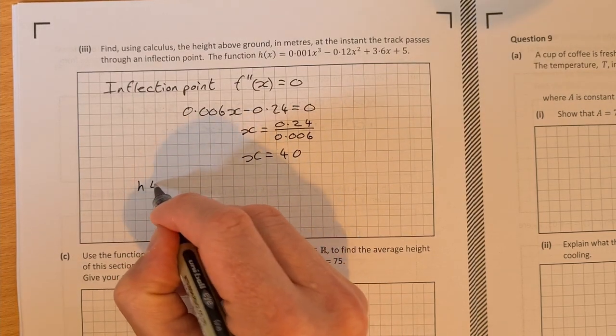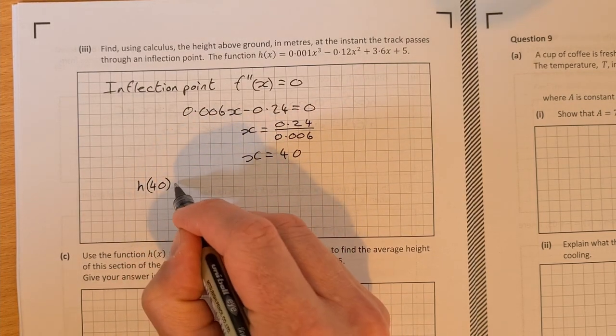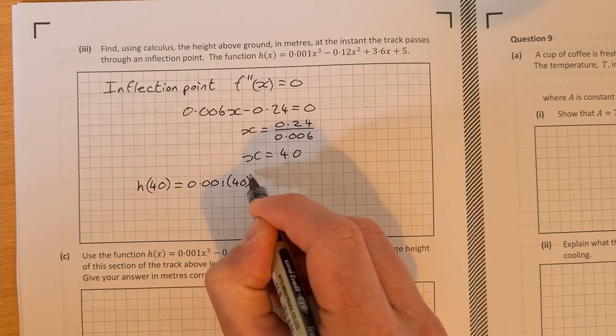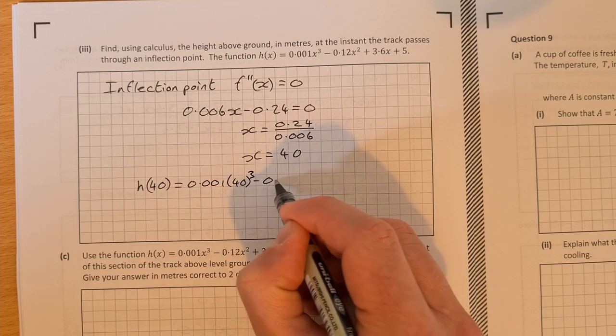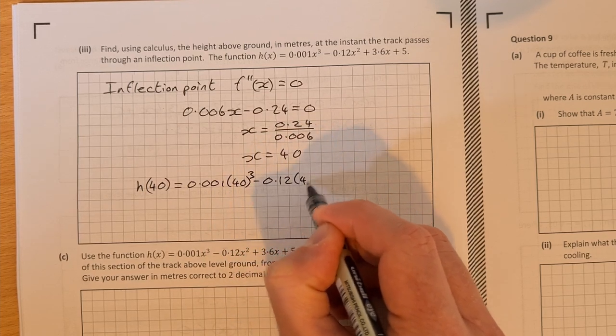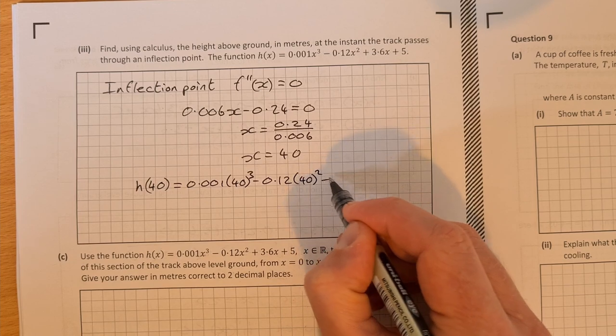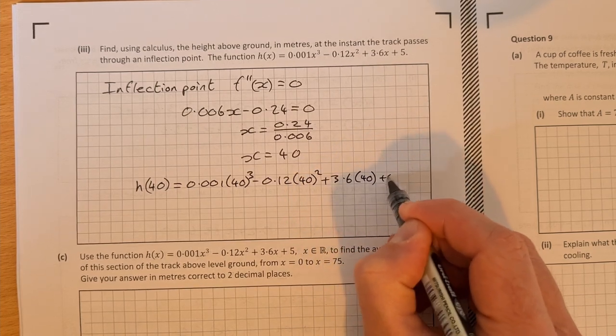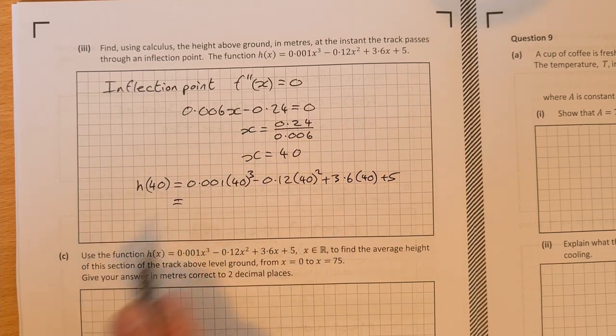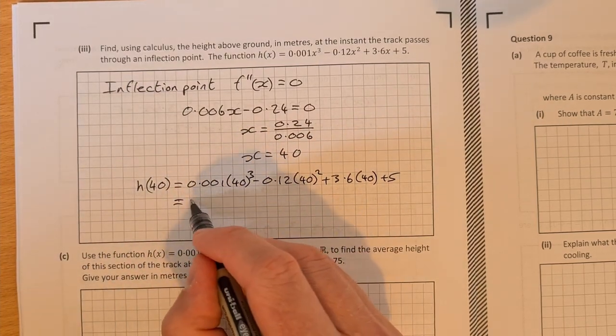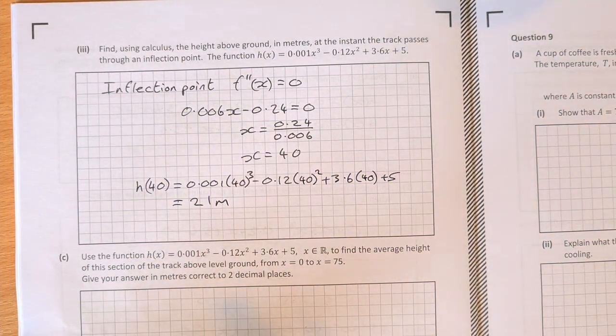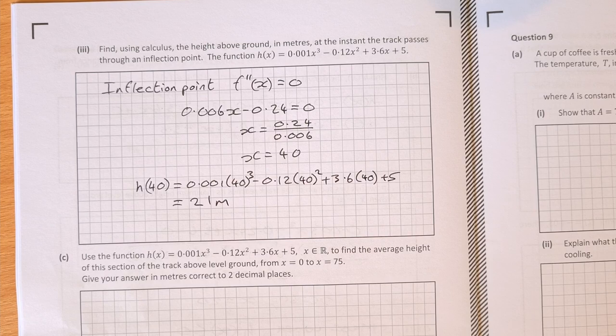So then we want to find the height that it is at x equal to 40. So we find h of 40. So back into our original function. So that's equal to 0.001 times 40 cubed minus 0.12 times 40 squared plus 3.6 times 40 plus 5. And into your calculator with all that stuff there and you get 21 meters. So the height above the ground at the point of inflection, which is x equal to 40, is 21 meters.